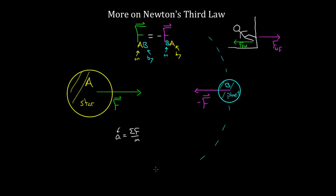Newton's third law is universal, but people still have trouble identifying these third law partner forces. One of the best ways to do it is by listing both objects. As soon as you list both objects, to figure out where the partner force is, you can just reverse these labels. So if one of my forces is the force on the wall by my foot, to find the partner force I can just reverse the labels and say it's got to be the force on my foot by the wall. So this is a great way to identify the third law partner forces, because it's not always obvious what force is the partner force.